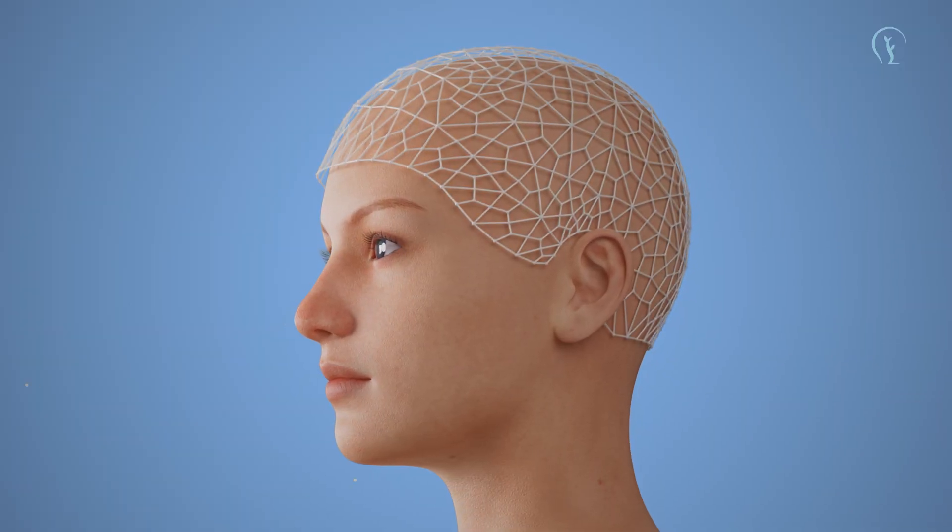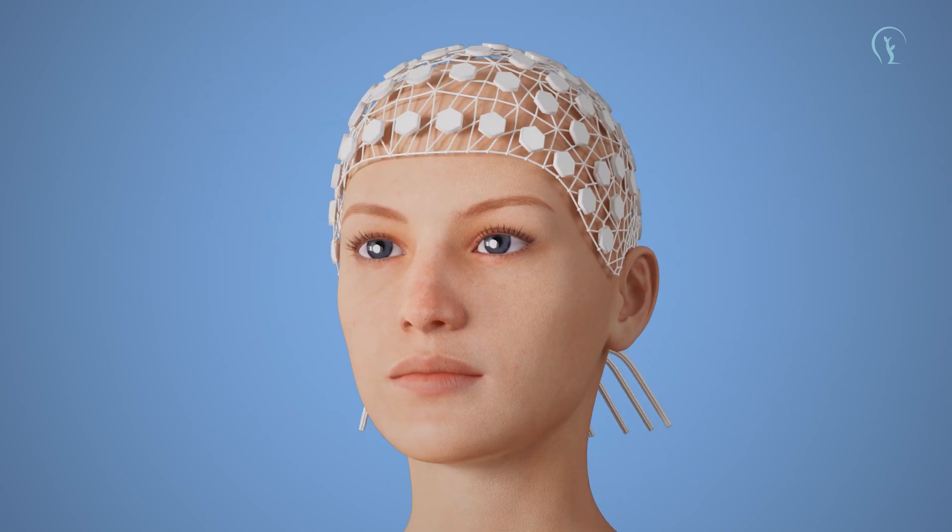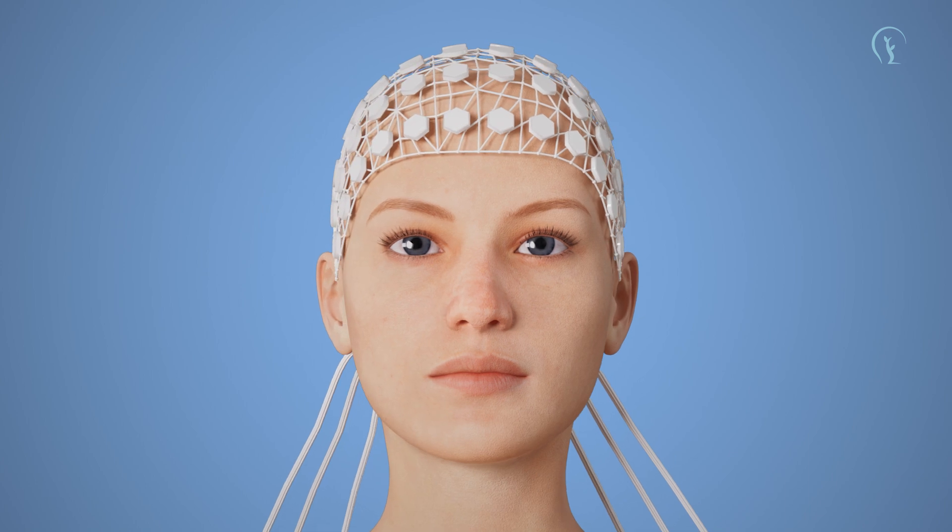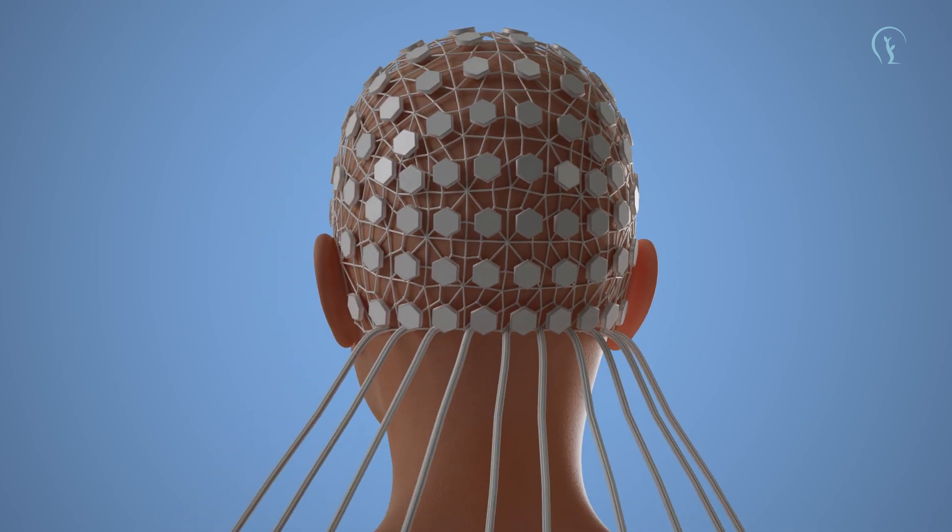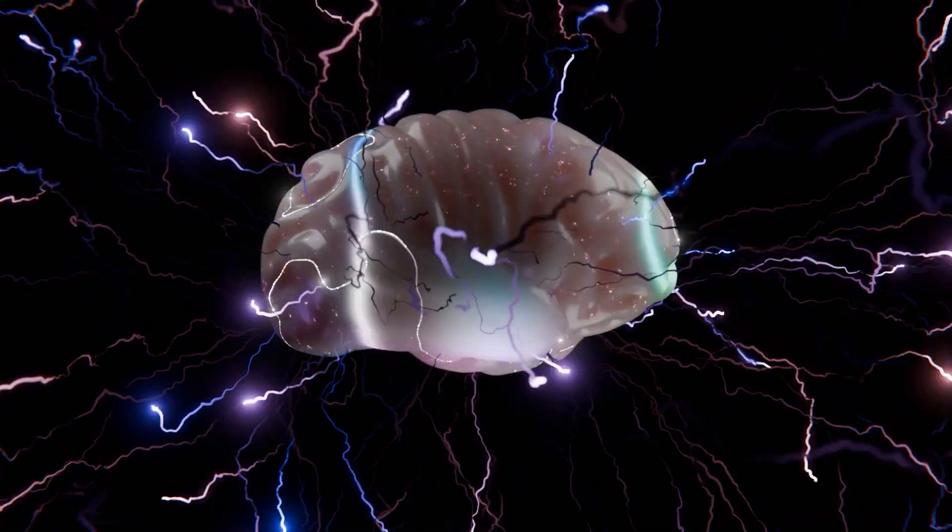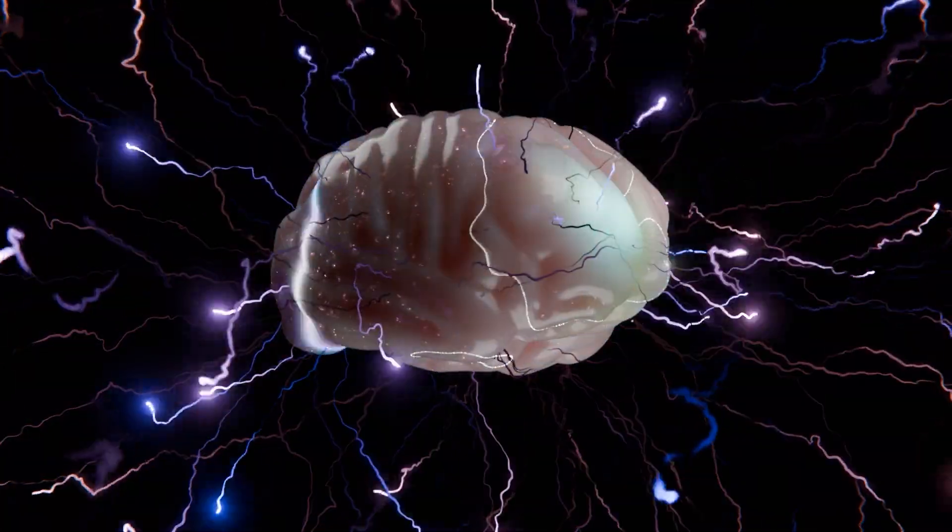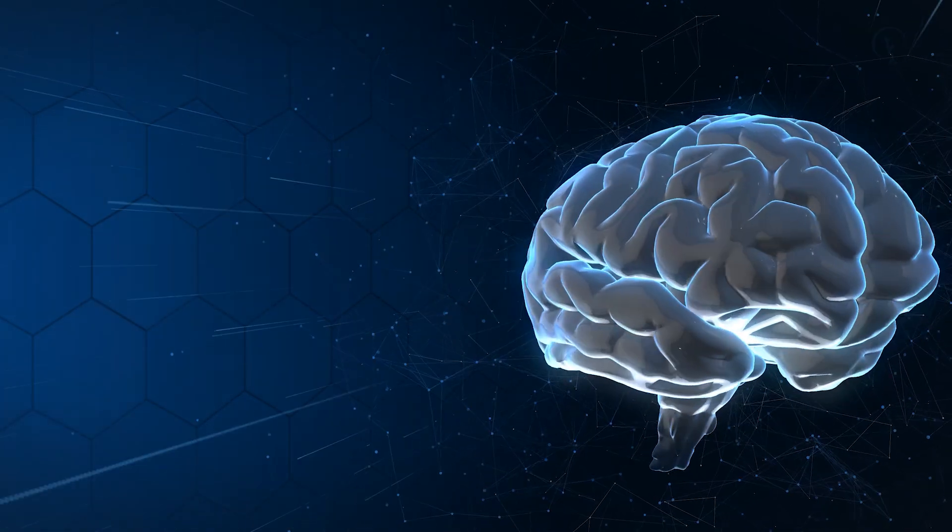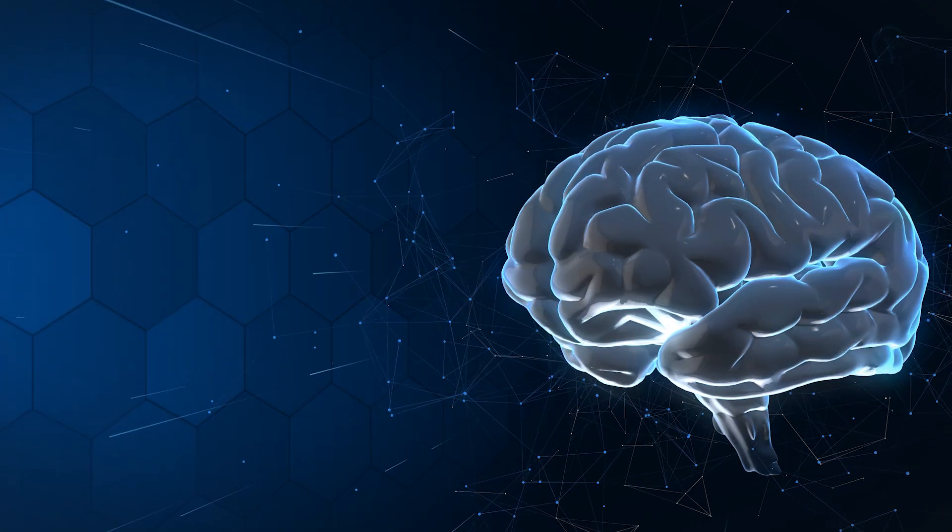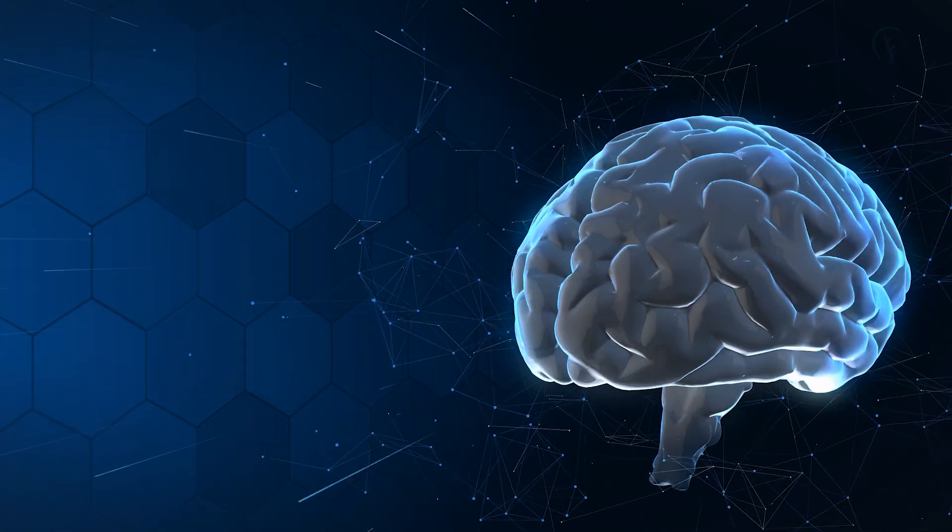One of the most compelling studies on human magnetoreception was conducted by neuroscientists who placed participants in a completely dark, magnetically shielded chamber. They then manipulated the surrounding magnetic field while recording the participants' brain activity using EEG, electroencephalography. The results were surprising. Even though the participants were unaware of the changes, their brain waves, specifically their alpha waves, showed clear responses to shifts in the magnetic field. Alpha waves are linked to relaxation and cognitive processing, and their sudden suppression suggested that the brain was detecting and reacting to magnetic changes, even if the participants weren't consciously aware of it.